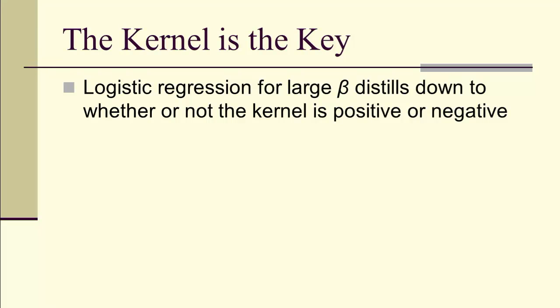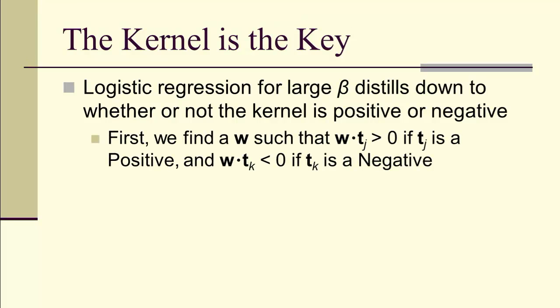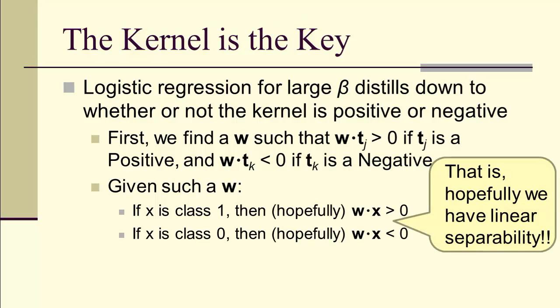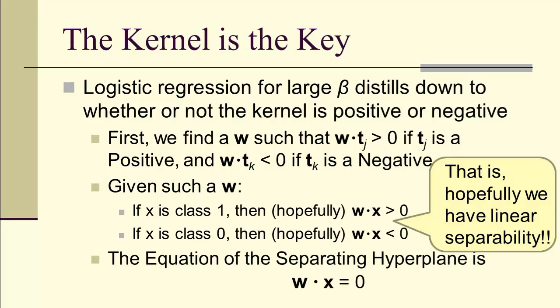Logistic regression as beta gets large really boils down to determining whether or not the kernel is positive or negative. We're looking for a parameter vector that gives us w dot T_j greater than zero if T_j is positive and w dot T_k less than zero if T_k is negative. Once we have such a w, we have our class definitions. If we have linear separability, which is what we're hoping for, then the equation of the separating hyperplane is just w dot x equal to zero.